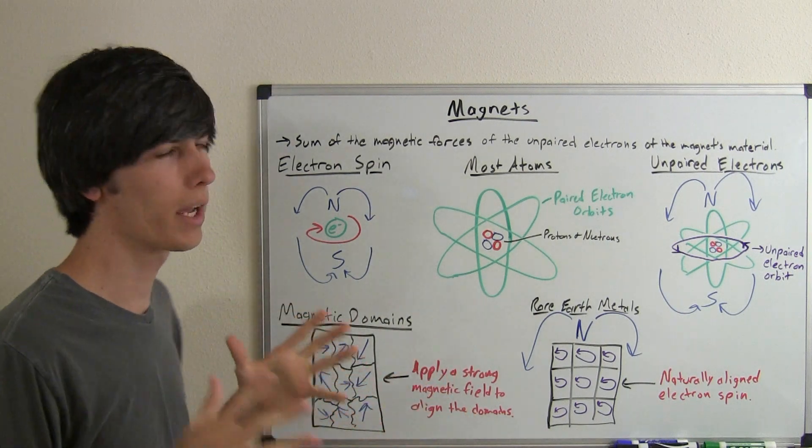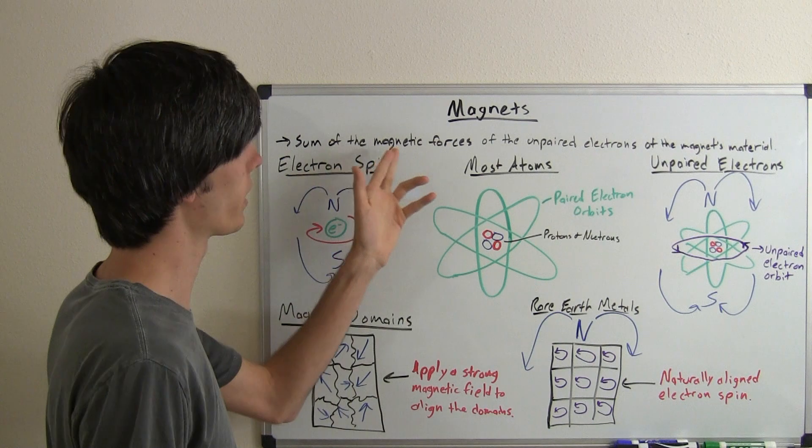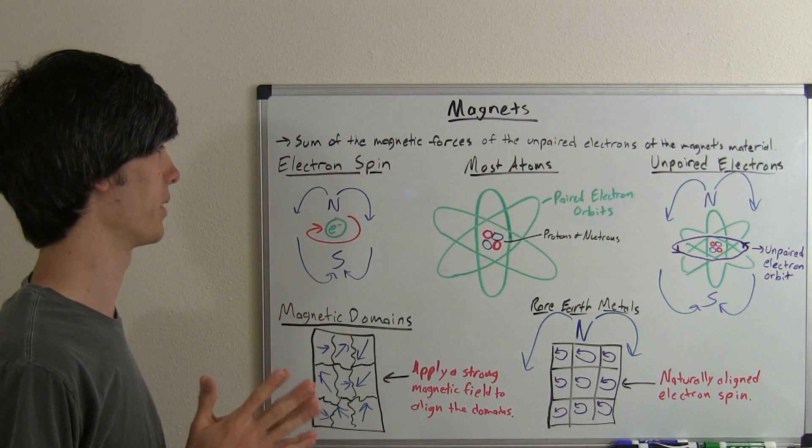So basically the way magnets get their magnetic force is it's a sum of the magnetic forces of the unpaired electrons of the magnet's material. So what does that mean?